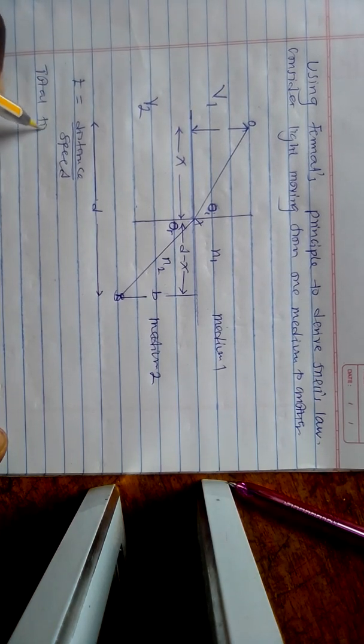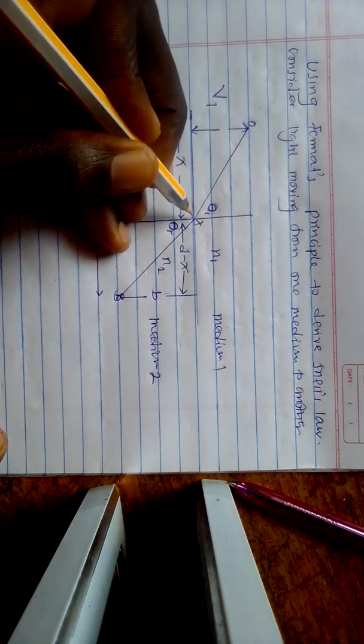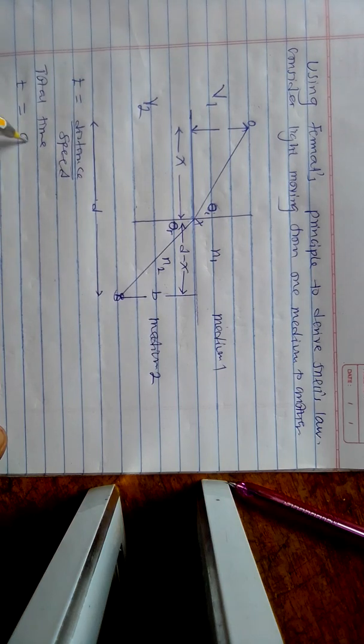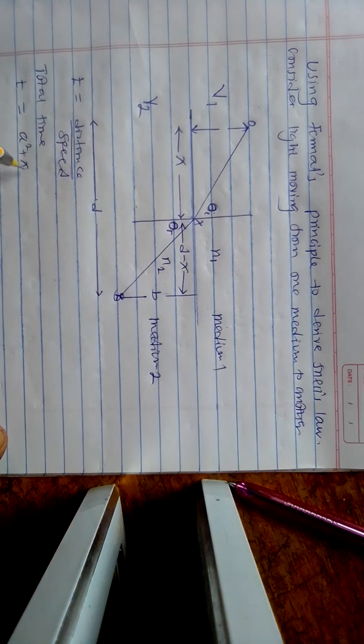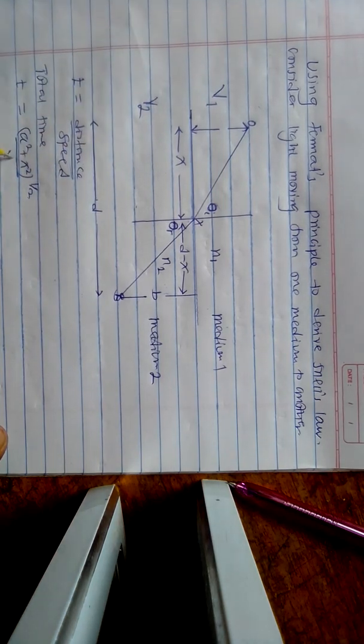The time from A to B, T, will equal distance OX, which is the square root of A squared plus X squared, divided by the speed which is V1 here.